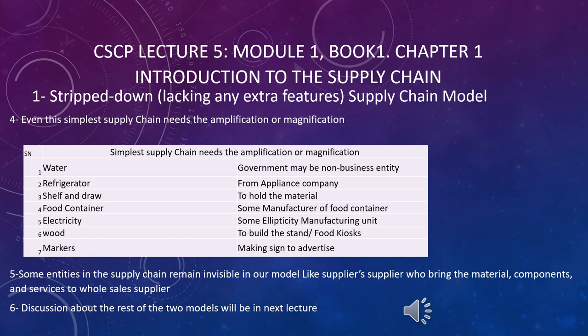There are some entities we don't look at in more detail in this course. Some entities in the supply chain remain invisible in a model, like the supplier's supplier. The supplier's supplier brings the material components and services to the wholesaler supplier. Even the supplier has suppliers of raw material components and other things — that will not be discussed in more detail.